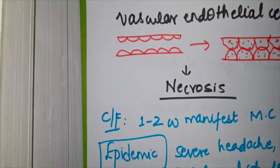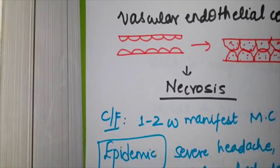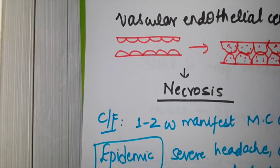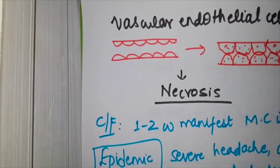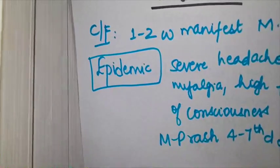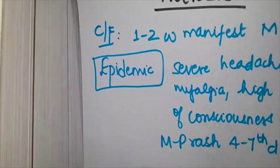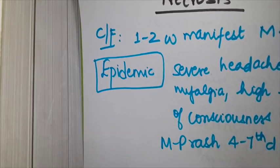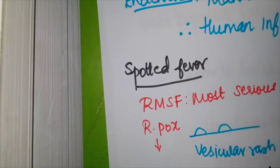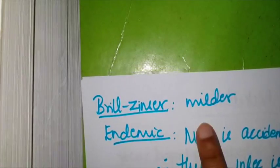Clinical features typewise: epidemic typhus is the severe form of the disease. You'll have severe headache, chills, myalgia, high fever like a viral prodrome, and after one week it can be severe enough to cause clouding of consciousness. There's typical occurrence of maculopapular rash on fourth to seventh day of illness. These are the clinical features of epidemic typhus.